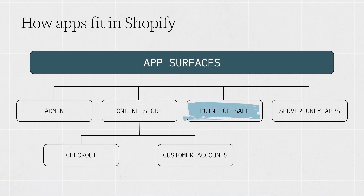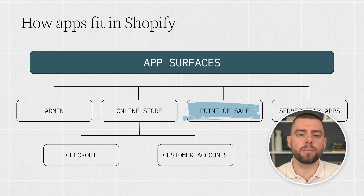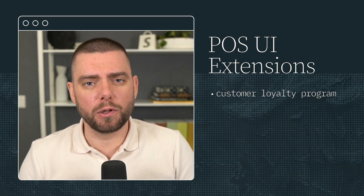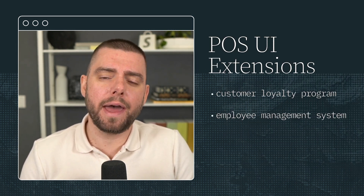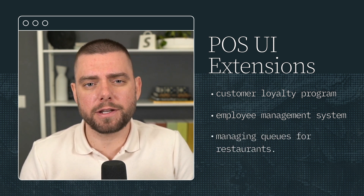The next surface is Shopify POS, or point of sale. This POS system enables businesses to sell products in person. Many retail businesses require further customizations, done through POS UI extensions. These apps might be a customer loyalty program, employee management system, or managing queues for restaurants.